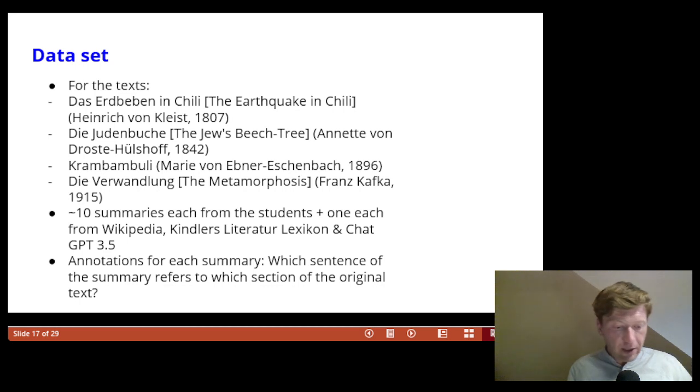On this slide you can see some information about our dataset. The literary texts are prose texts by Heinrich von Kleist, Annette von Droste Hülshoff, Marie von Ebner Eschenbach and the aforementioned Franz Kafka. The canonical status of the texts can be rated differently, but all of them are to a certain extent canonical.